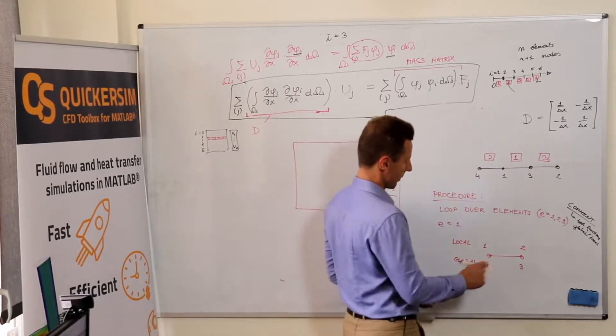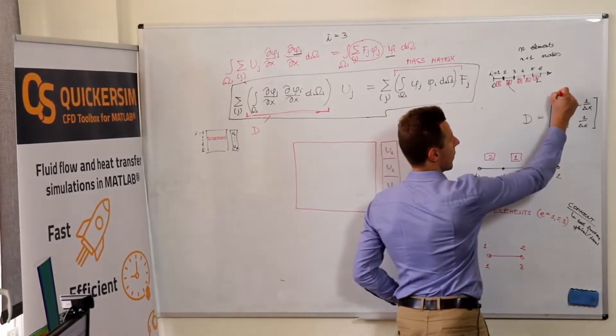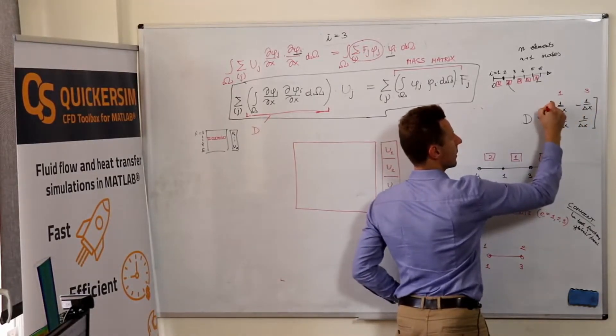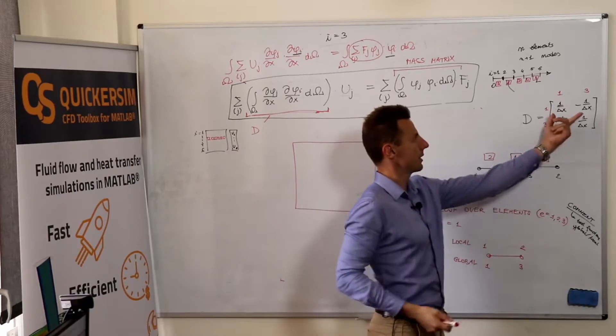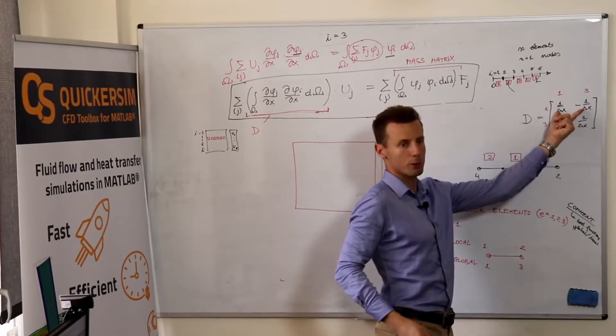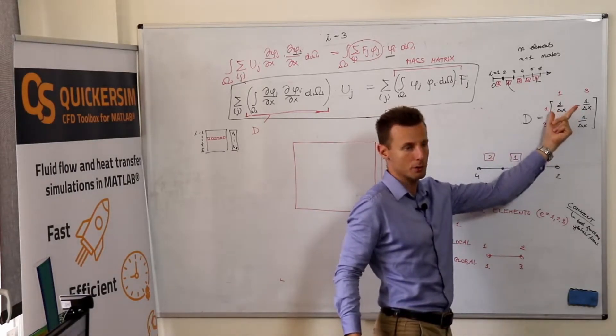And we do it the following way. Let's see. Right now we've got the global indices, one and three, one and three. So this row should contribute to the first global row.